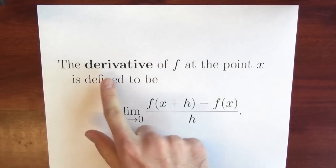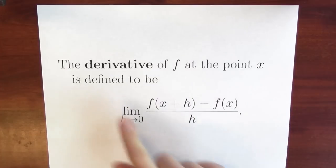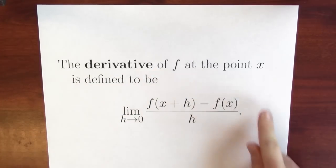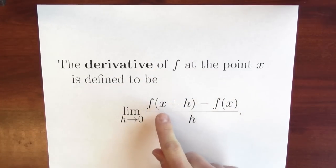We want to capture precise information about how wiggling the input affects the output. Here's the definition of derivative that will allow us to do exactly that. The derivative of f at the point x is defined to be this limit: the limit of f(x+h) minus f(x) divided by h as h approaches zero.